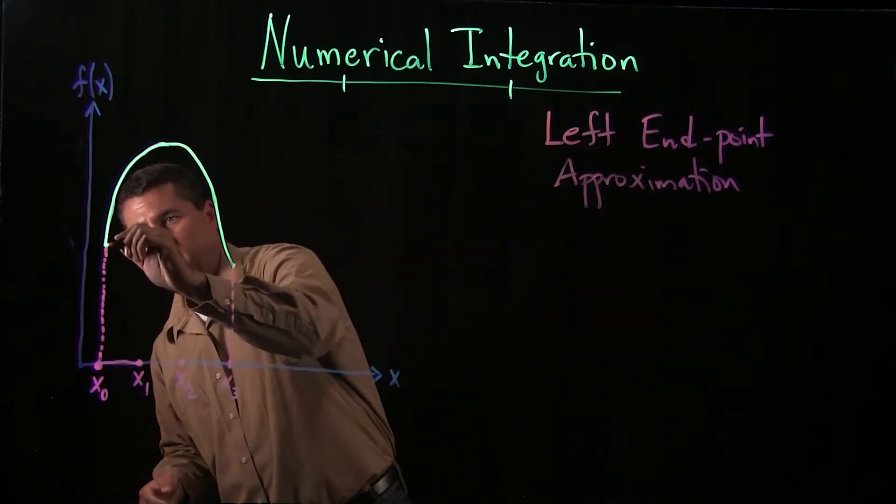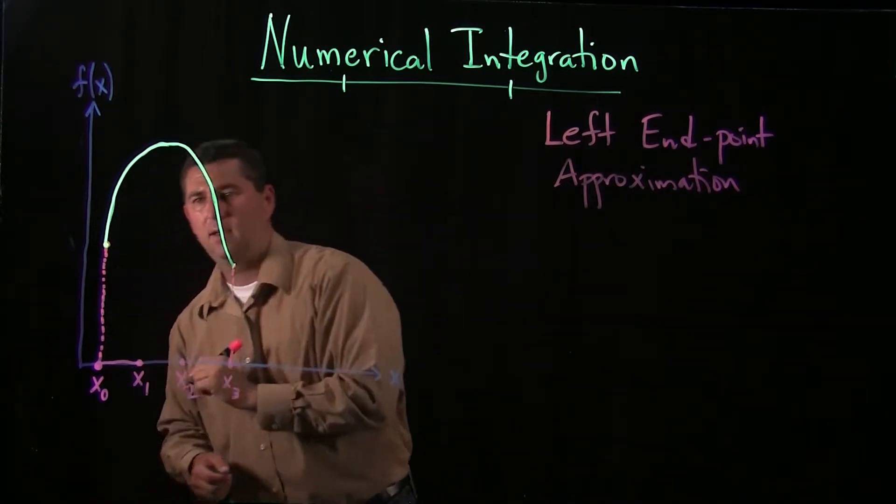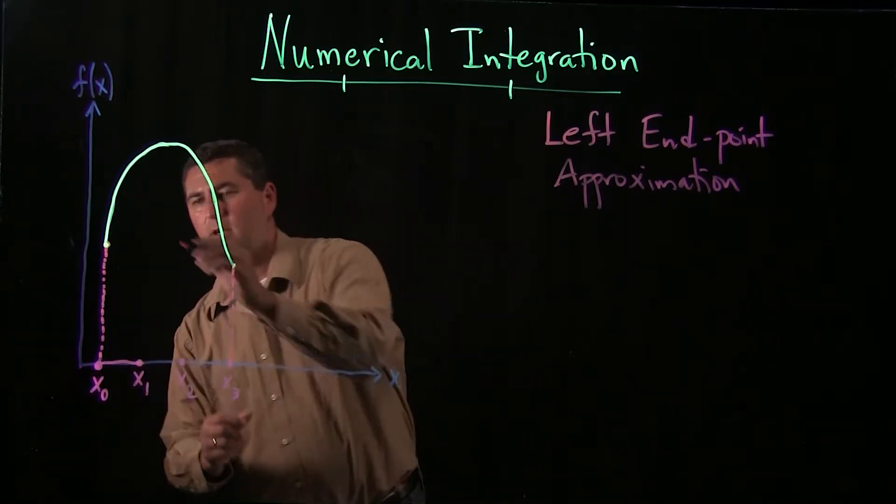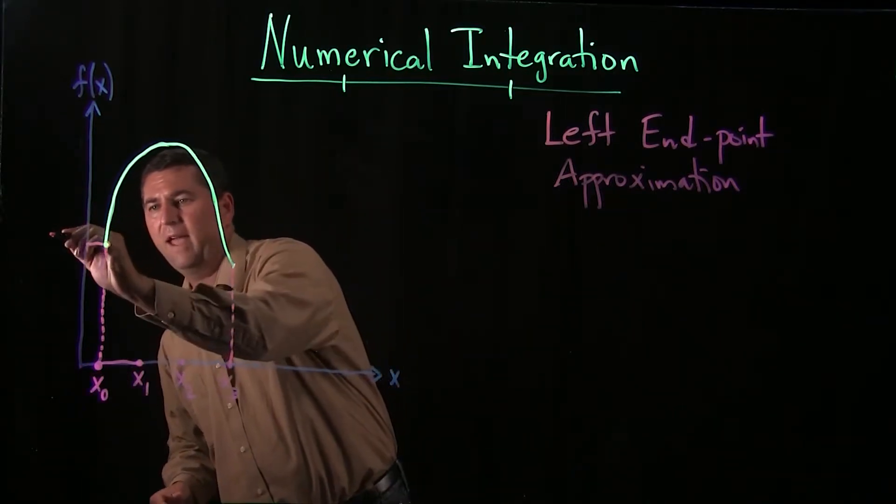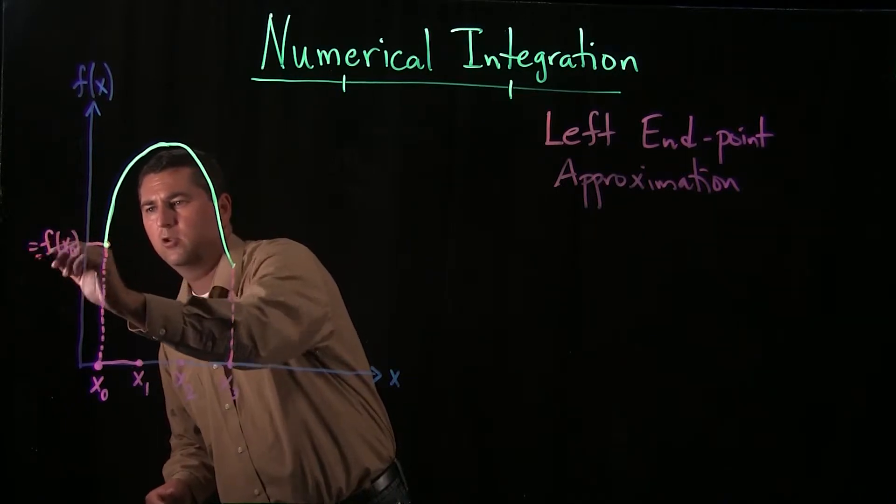And the height is going to be whatever the value is. So this is f of x0, or if I'm trying to be short, I'll call this y sub 0.